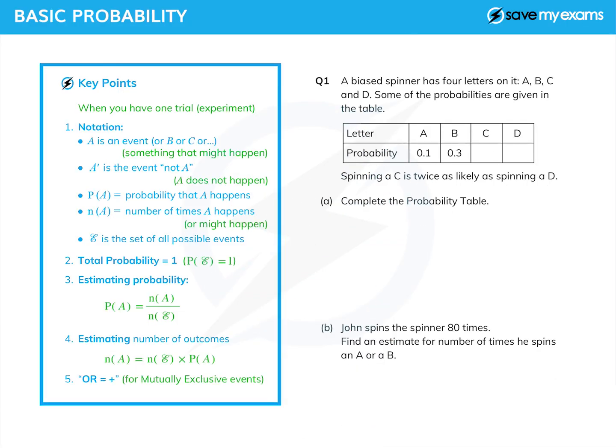In this tutorial, we're going to look at some ideas surrounding probability, the basics of things, and some notation, and what happens when you have one trial. A trial is an experiment, it's just something which involves probability. If you have more than one trial, we call that combined probability, and there is a separate tutorial on that.